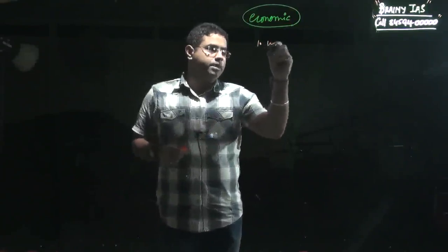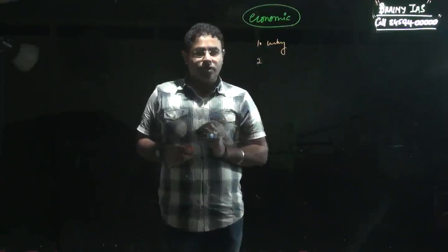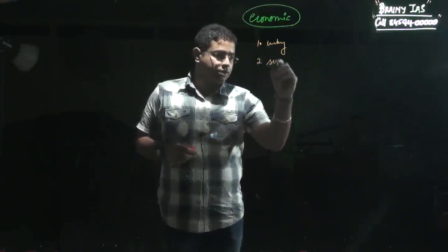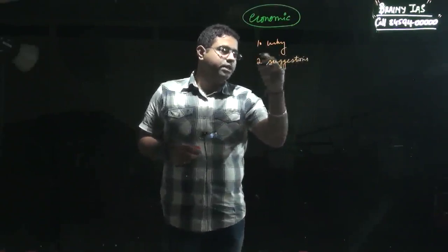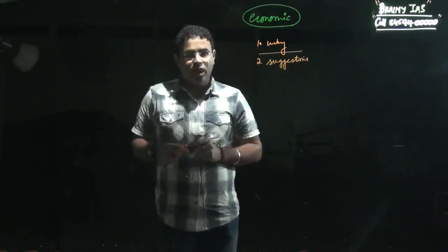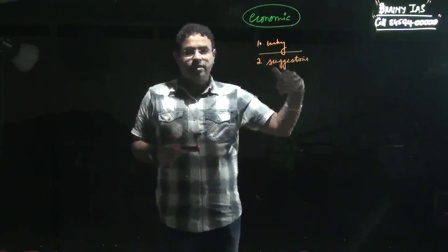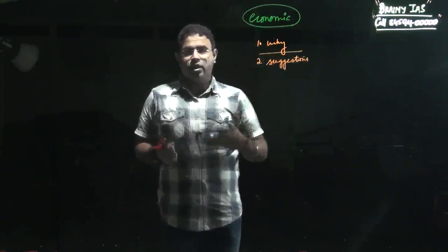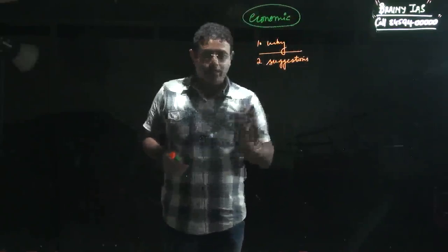The first dimension is why there has been a downturn, and secondly he is focused on suggestions - what actually needs to be done. There are two aspects we need to understand: why there has been a downturn, and secondly how the economic revival can be brought in.